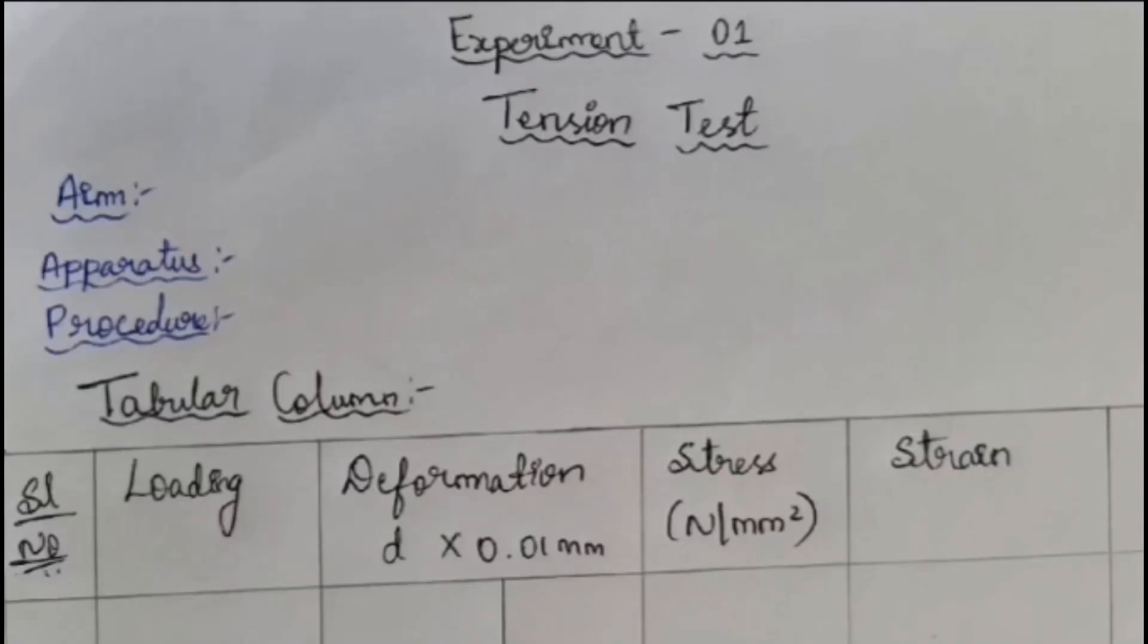Hello guys, welcome to TechAzo channel. First, we will be discussing about Tension Test. In the Tension Test, you have to write the aim, apparatus, procedure. Now, let's discuss about how to write the tabular column and how to fill it.